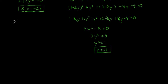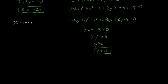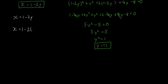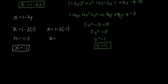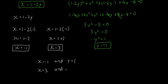Substituting back into x = 1 − 2y: when y = 1, x = 1 − 2(1) = −1; when y = −1, x = 1 − 2(−1) = 1 + 2 = 3. So our two solutions are x = −1, y = 1 and x = 3, y = −1. These aren't just x and y values — they are coordinate points.